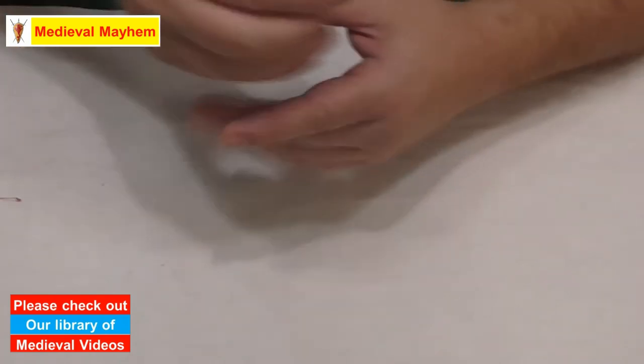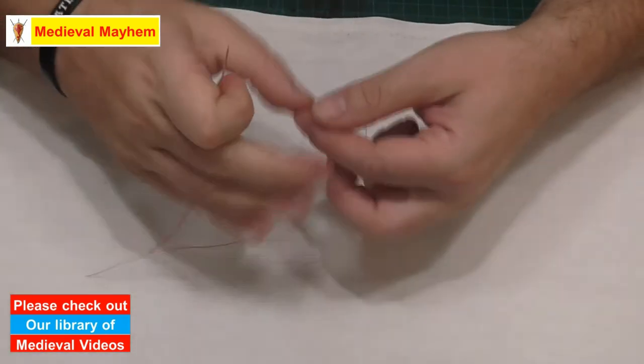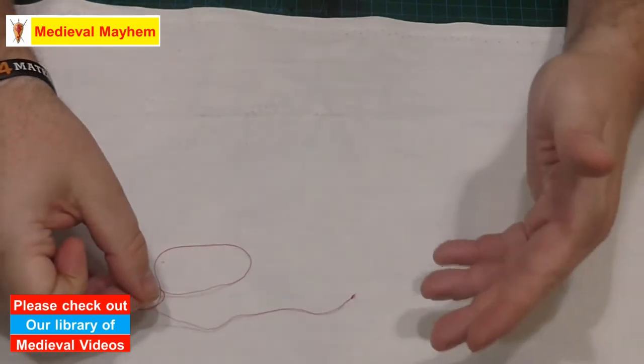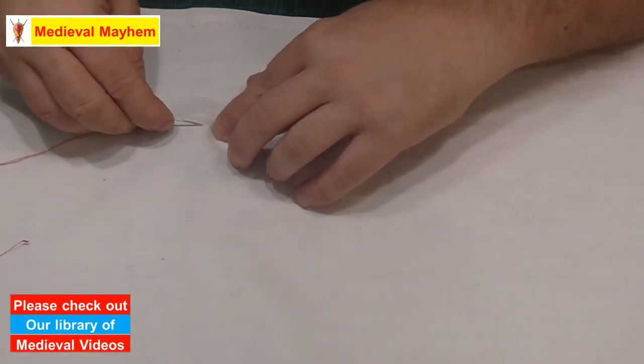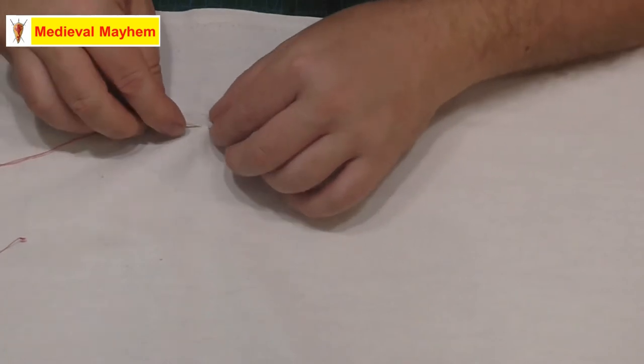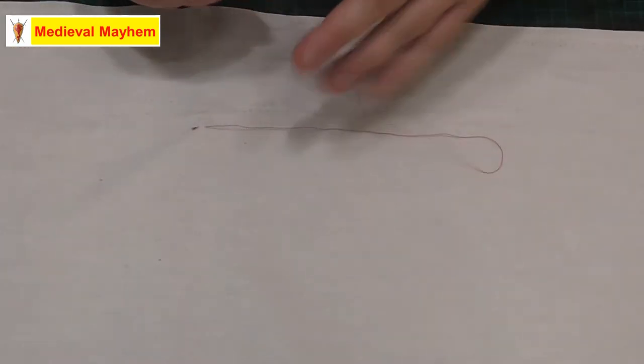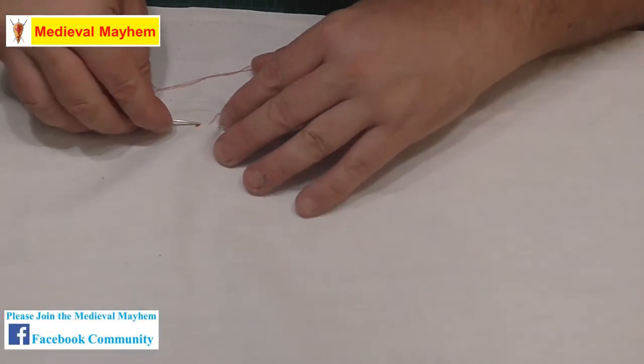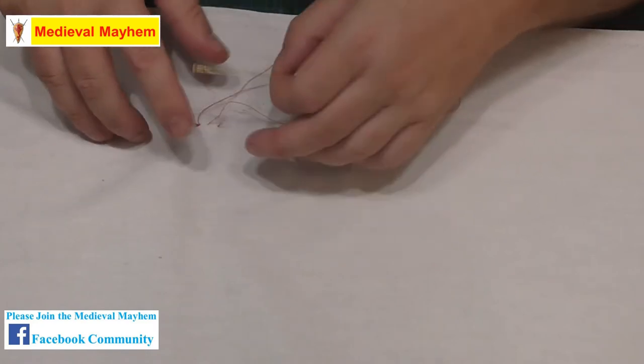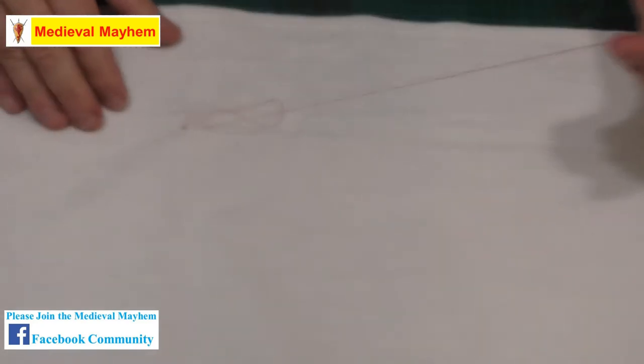So, I start my backstitch with a very simple knot at the end of my thread, and I just go through. Now the main thing here is consistency. Now I know there are some slight variations. Different people do this slightly differently. That's okay. It's just a little bit of a question about what's going to work for you.